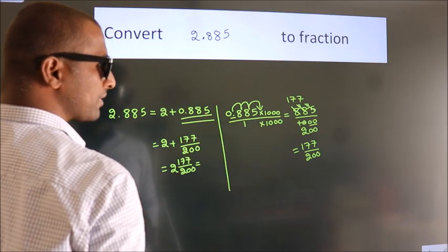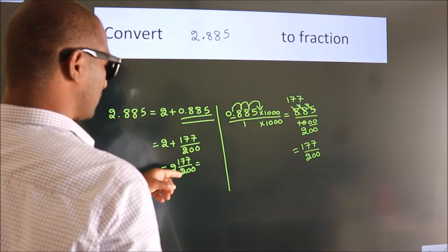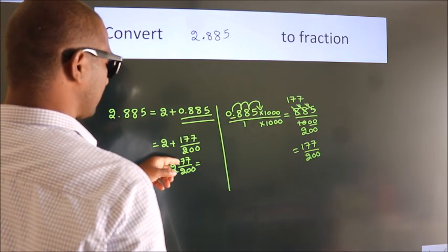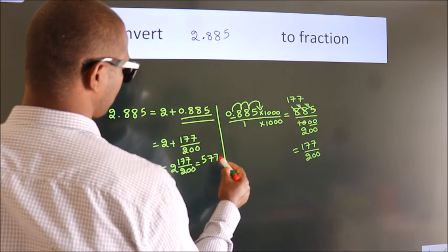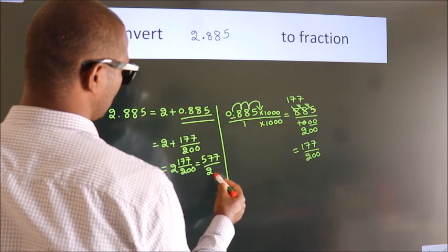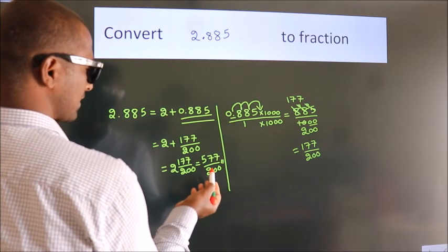And in improper fraction it is 2 into 200, 400 plus 177, 577 by 200 is our fraction.